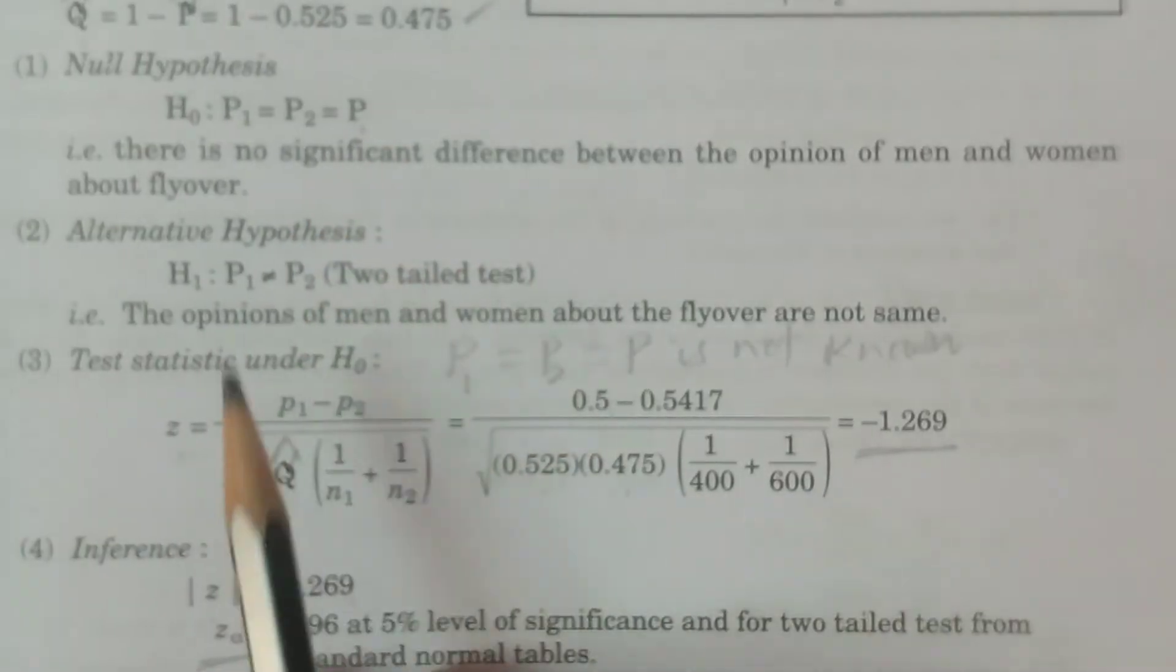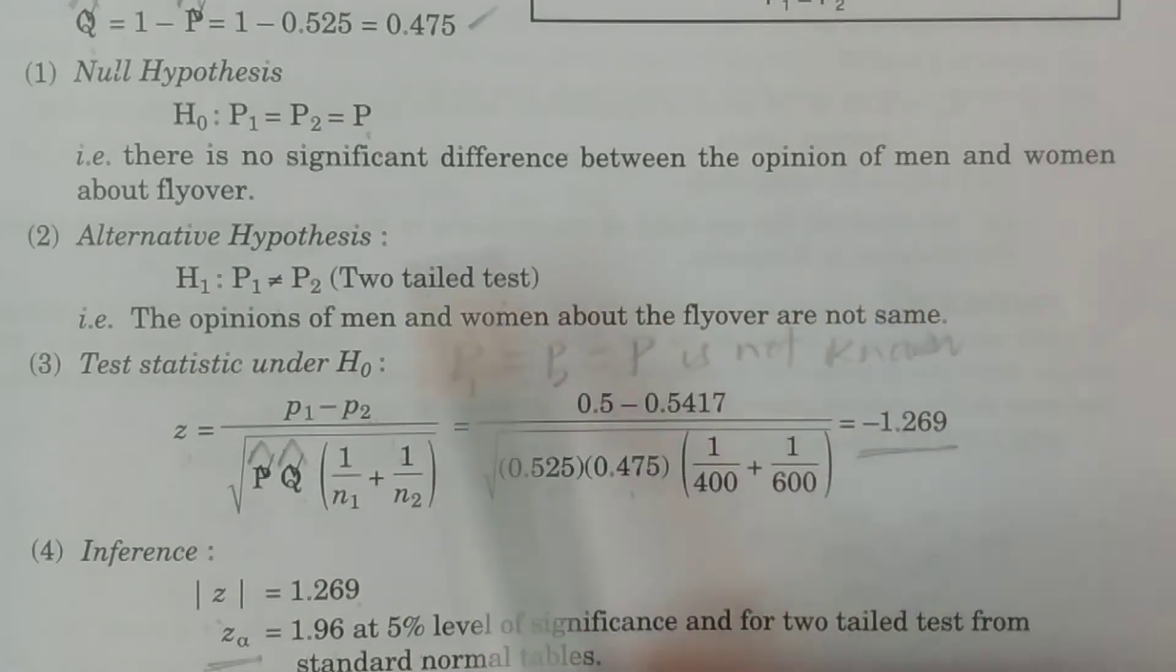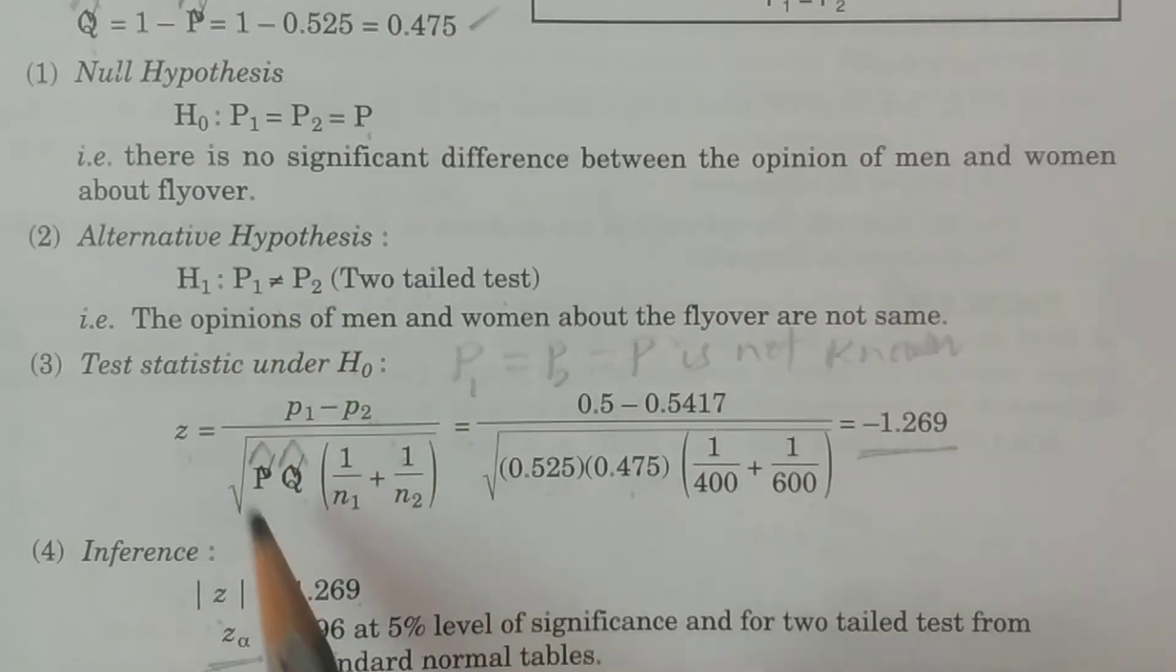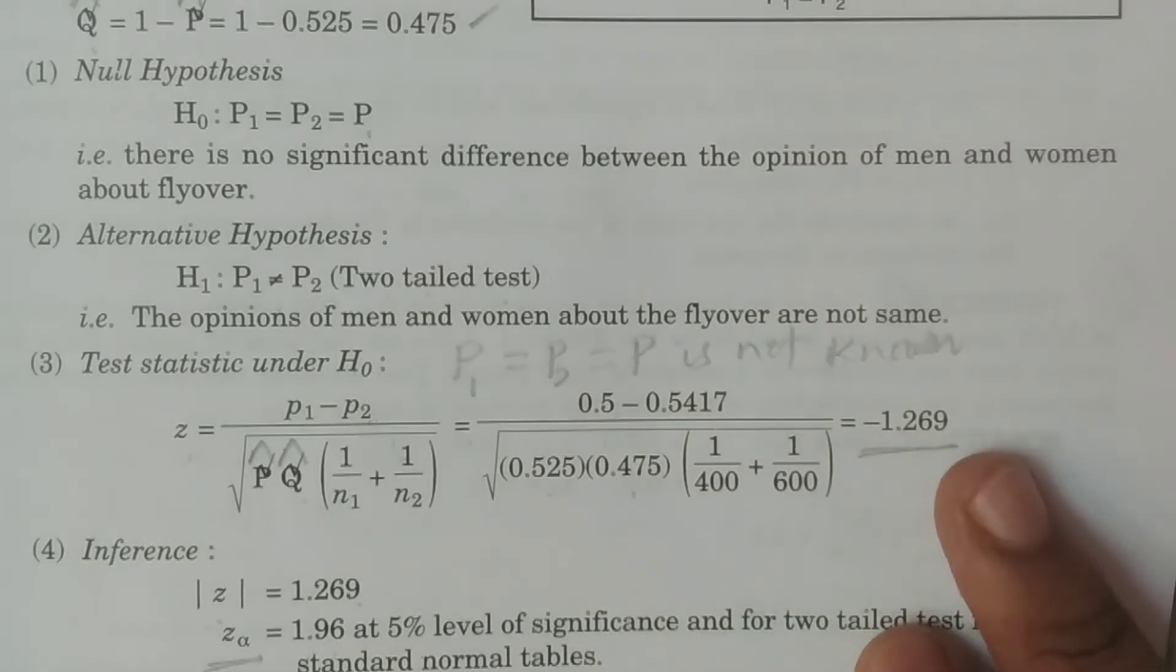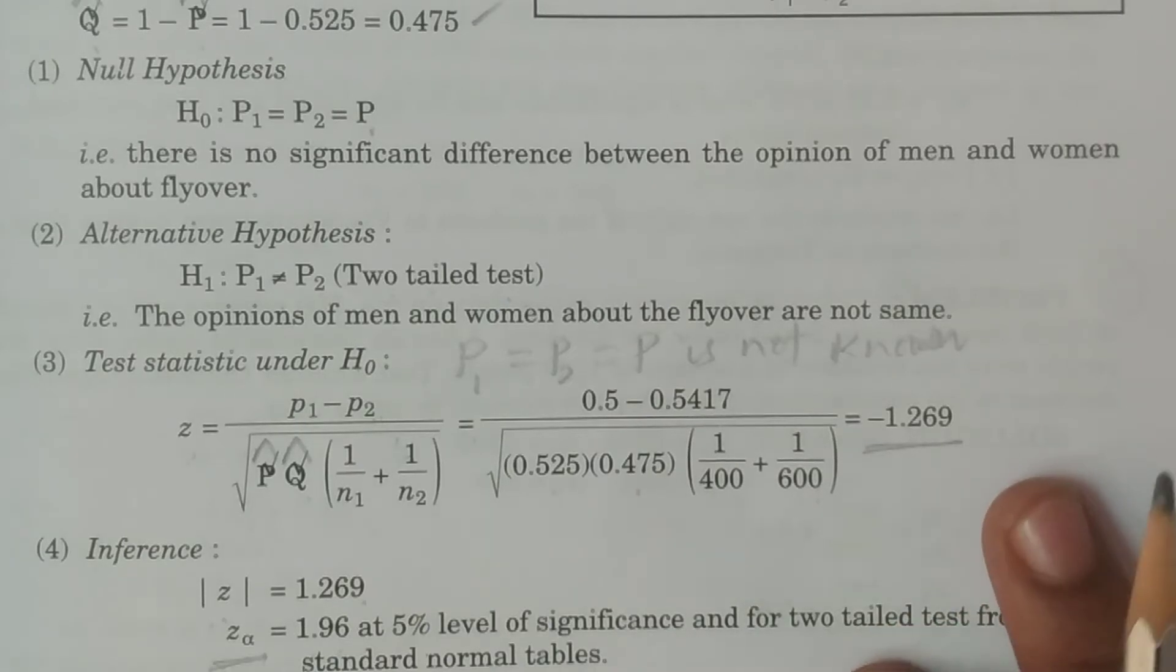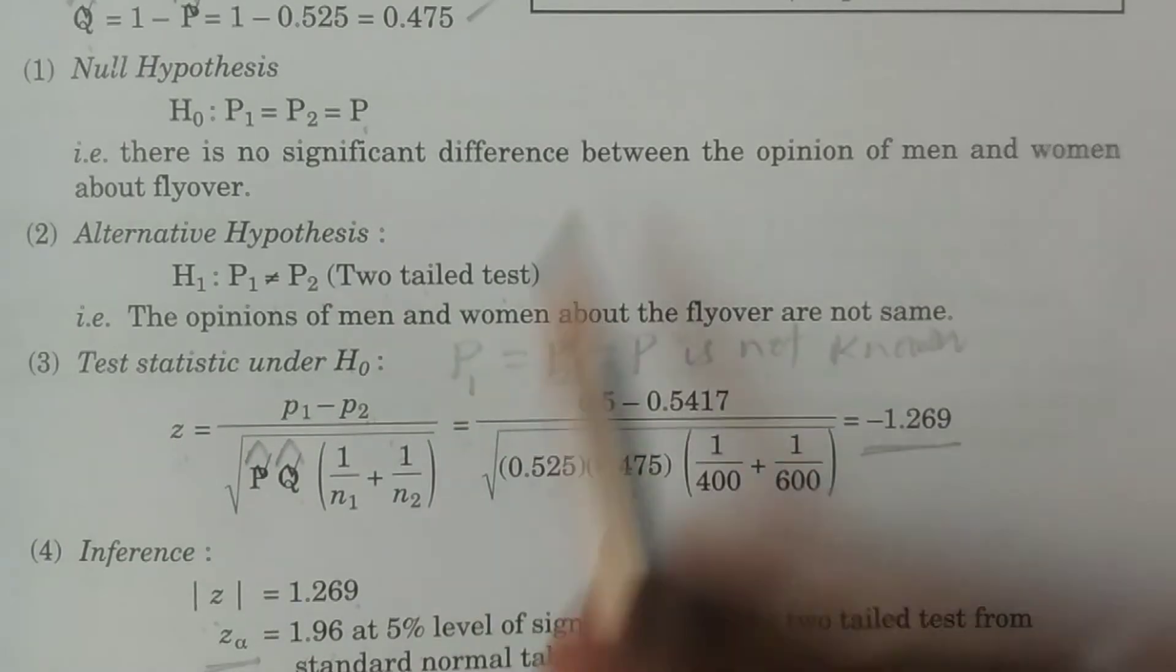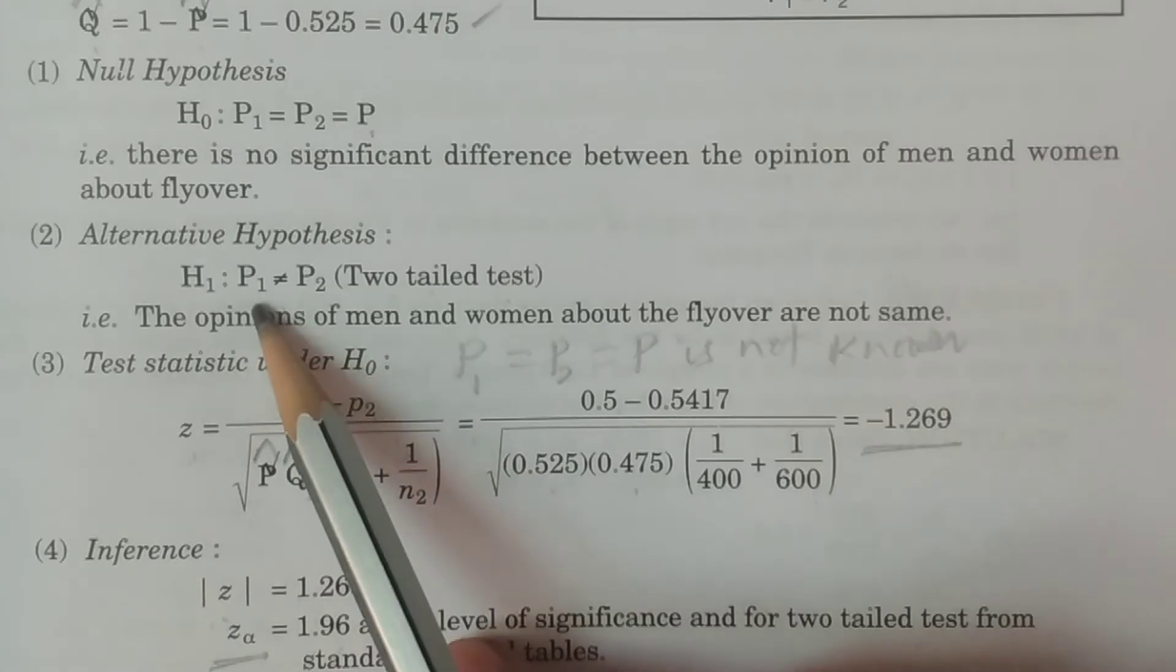For any conceptual or important points: First, the null hypothesis H0: P1 is equal to P2 is equal to P. The meaning is that there is no significance difference between the opinion of men and women in favor of the proposal about the flyover. There is no significance difference in the men's and women's opinions.